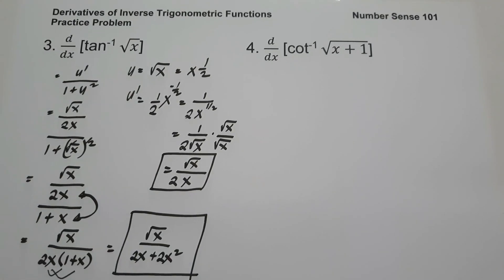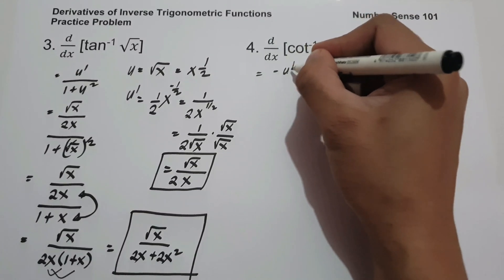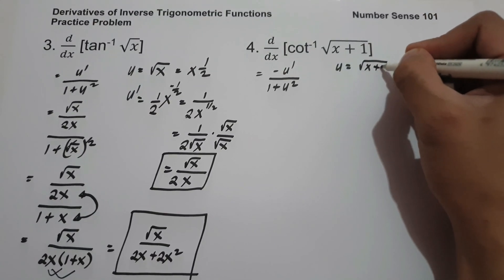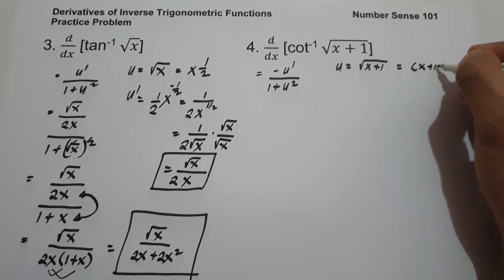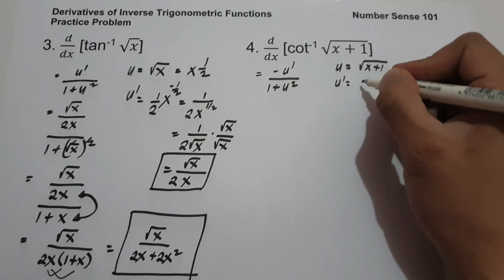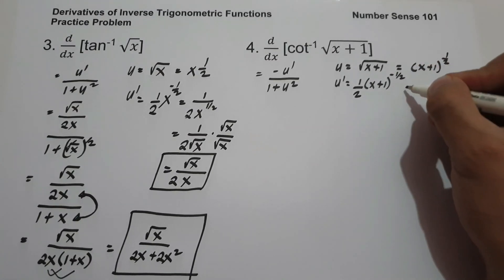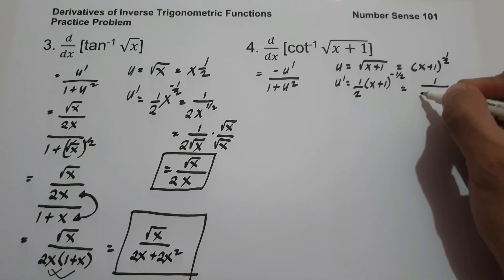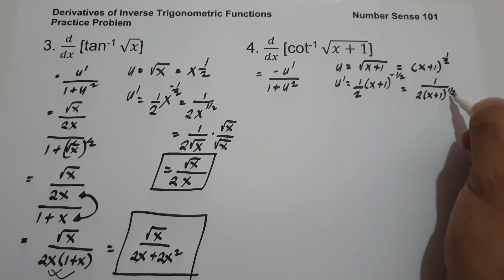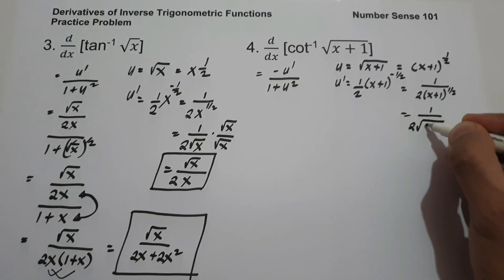On number 4, what is the derivative of arc cotangent of square root of x plus 1? The derivative of arc cotangent is negative u' over 1 plus u squared. So let us have u equal to square root of x plus 1, or written as quantity x plus 1 raised to 1 half. Then u' is the derivative of x plus 1 raised to 1 half, giving 1 half times x plus 1 raised to negative 1 half, which simplifies to 1 over 2 square root of x plus 1.